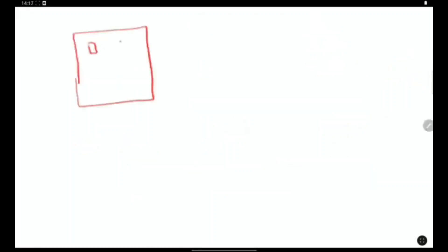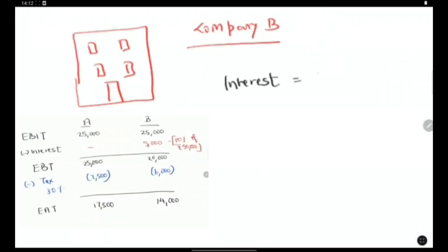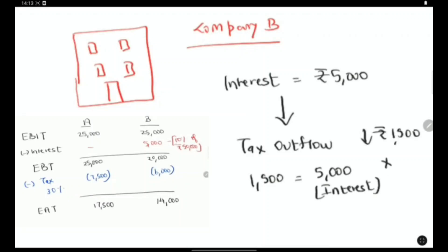Why is the case? In the case of company B, interest being tax deductible leads to a savings in tax of 1,500. Thus 1,500 is nothing but 5,000 rupees interest into 30% tax rate.